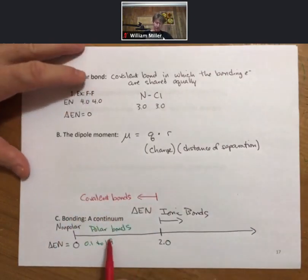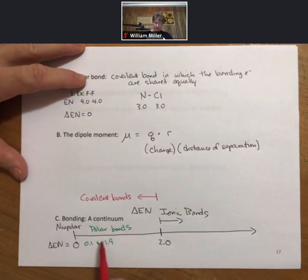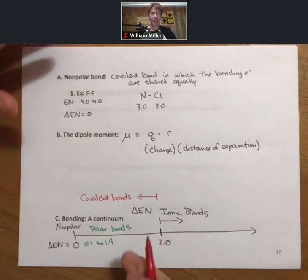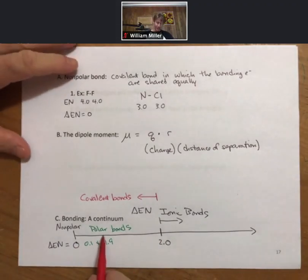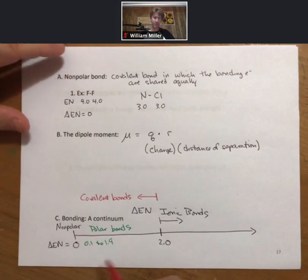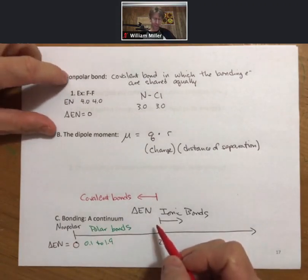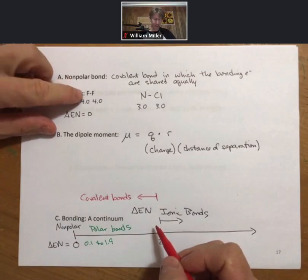Further, covalent bonds are broken into polar bonds and nonpolar bonds. We will talk more about how to tell when a molecule is polar or nonpolar once we discuss geometry and molecular geometry. So far, we've only looked at molecules with a single bond.